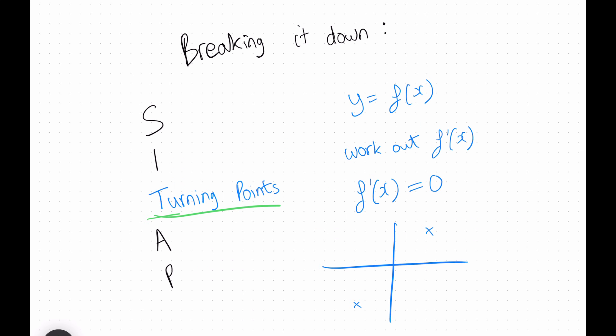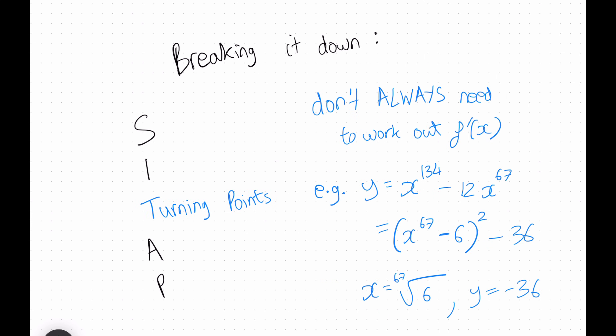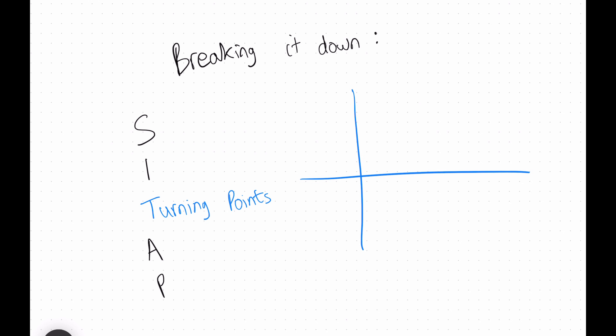Then for T, we have turning points. You work out the derivative, set it to 0, and mark out your points similarly to what you did with intersections. However, you don't always need to differentiate to find turning points. For example, if you were given a quadratic, it's quicker to complete the square. And you could also use symmetry — if you knew the graph had roots at 2 and 8, you know the stationary point is at the midpoint, which is 5.